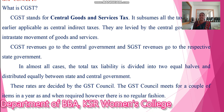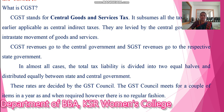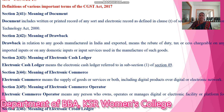CGST stands for Central Goods and Service Tax. They are levied by the central government for the intrastate movement of goods and services. CGST revenues go to the central government and SGST revenues go to the respective state government. In almost all cases, the total tax liability is divided into two equal levels and distributed equally between state and central government.